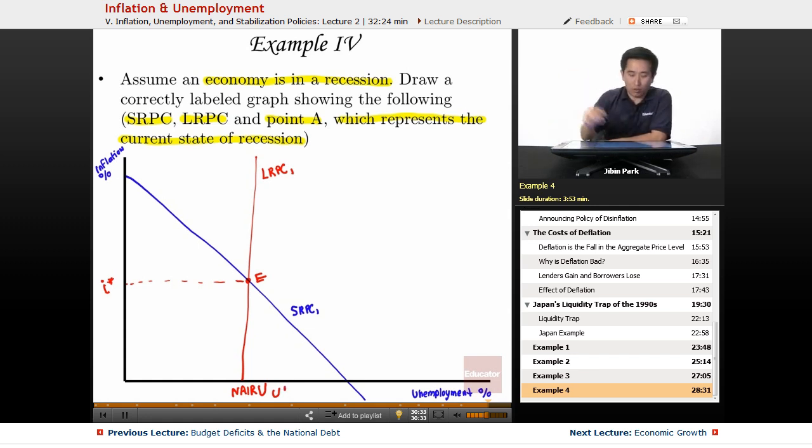Here's the million dollar question: is it going to be to the right or to the left of the LRPC? Well, let's examine what each of them would indicate. If you're on the left of the LRPC, you're indicating relatively higher inflation and lower unemployment, and that's more of